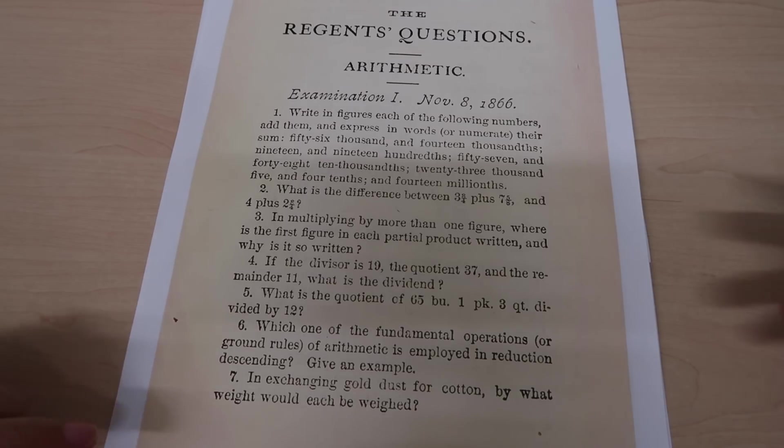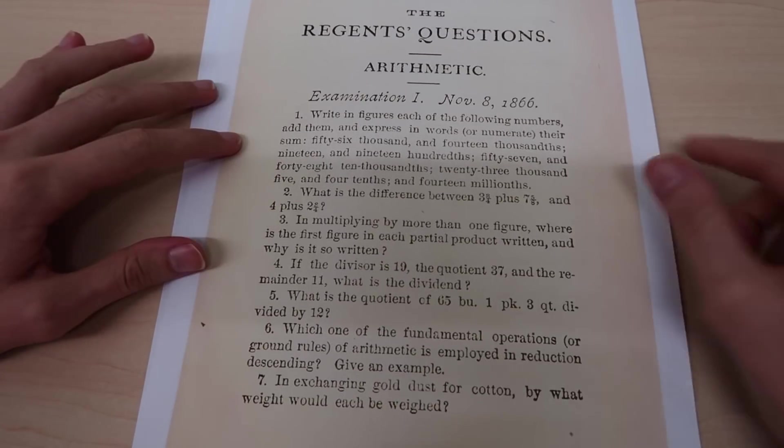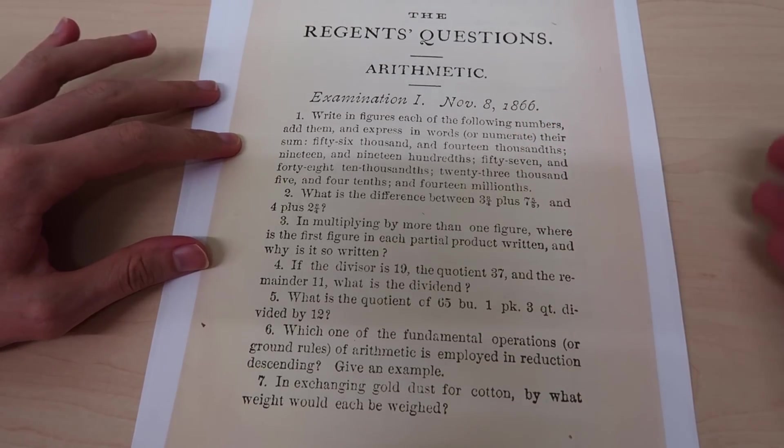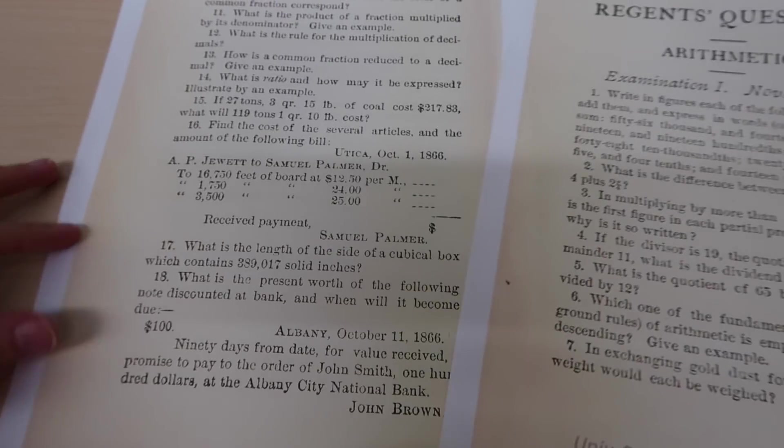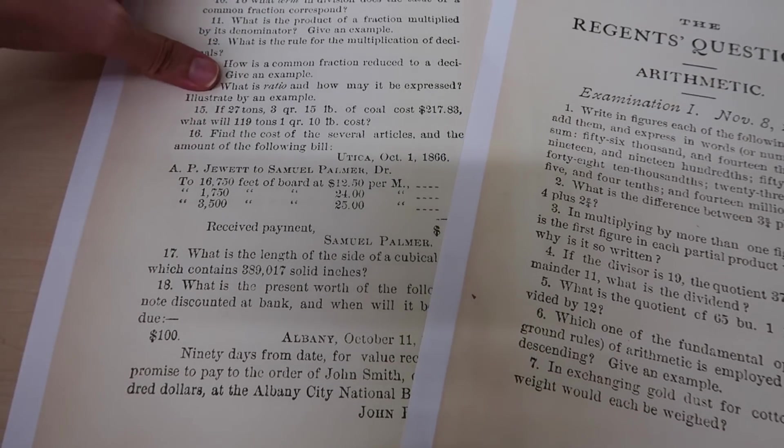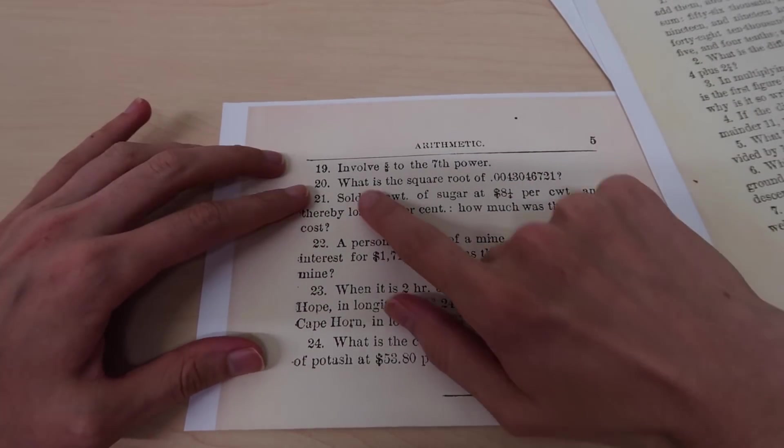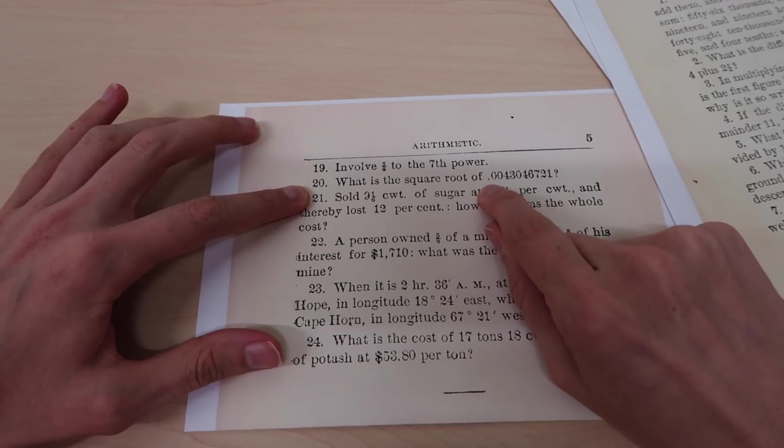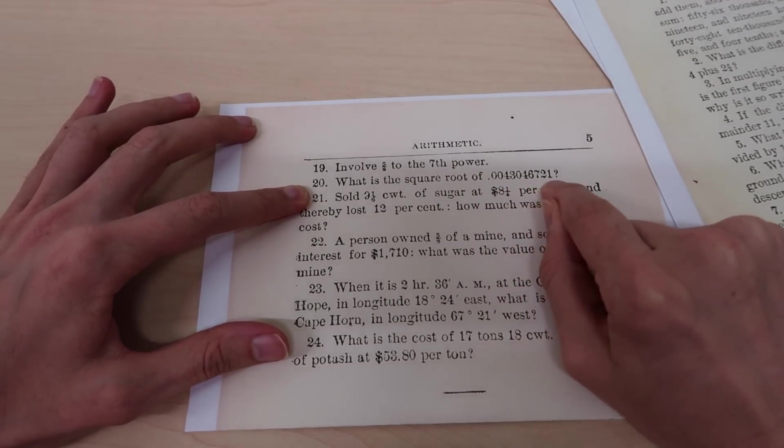Hi there, so in a video that I just uploaded on my channel I was looking through this exam paper. It's from 1866, so it's very old and it was interesting to see some of the arithmetic questions that were asked back then. One of the standout difficult questions, well at least what I would consider difficult, is this one here, number 20. What is the square root of 0.0043046721?